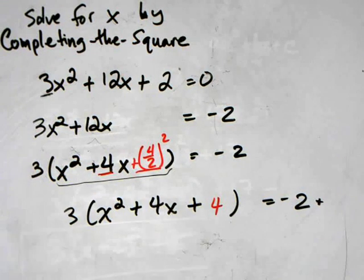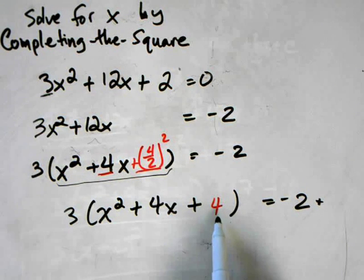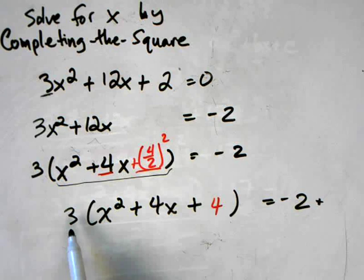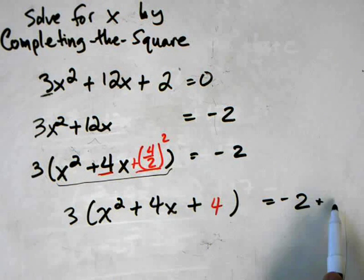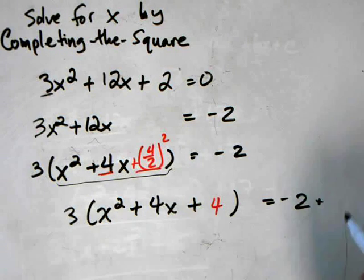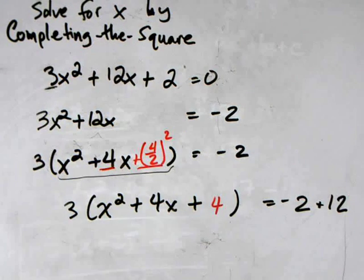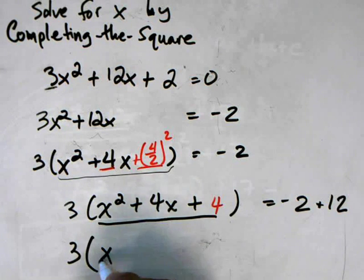It's a little bit different in this case because the 4 that we added is inside of the parentheses, which means it has to be multiplied by the term outside of it. So instead of adding 4 to the right side, I have to add 4 times 3, so 12 to the right side. Now I can proceed.